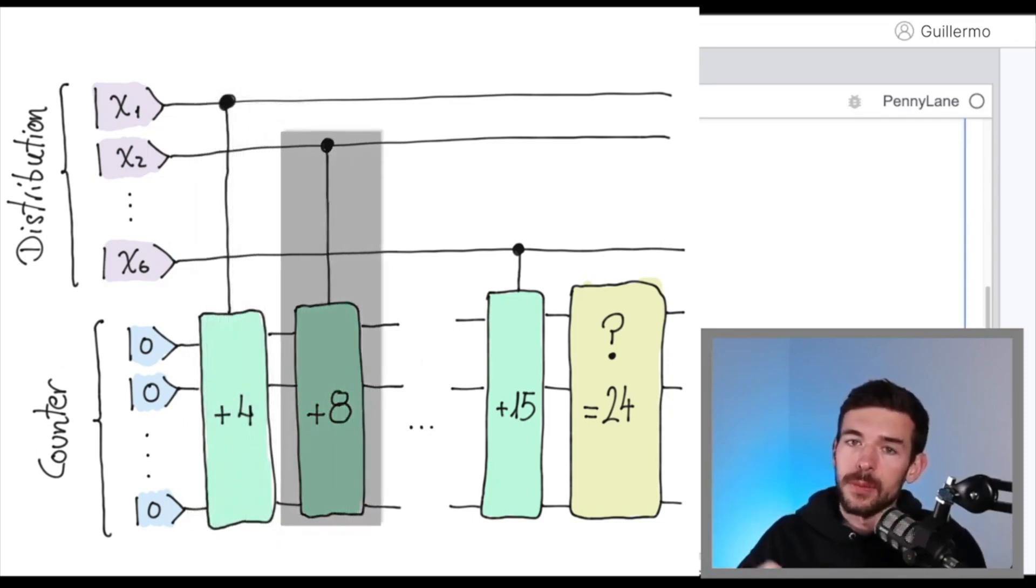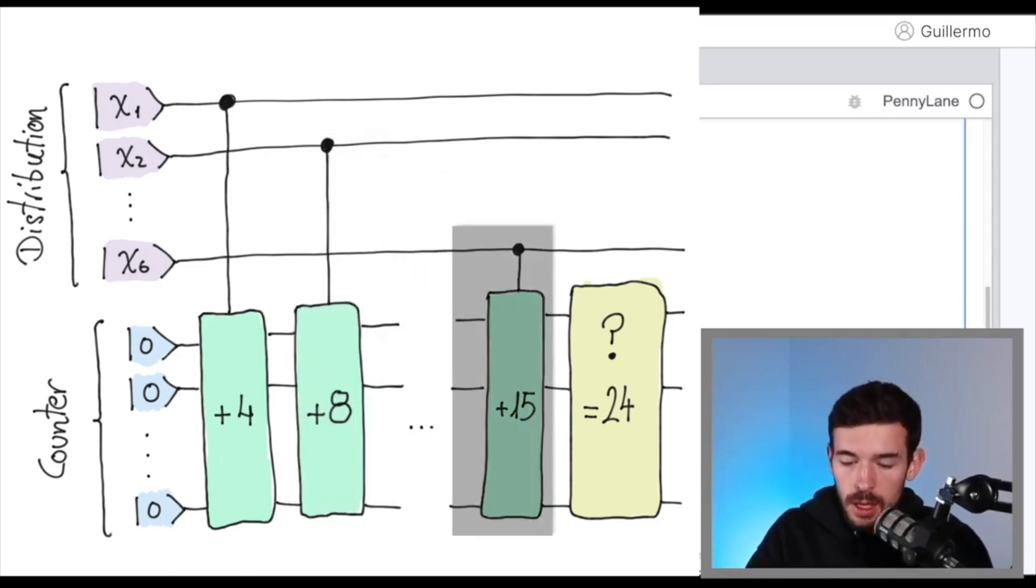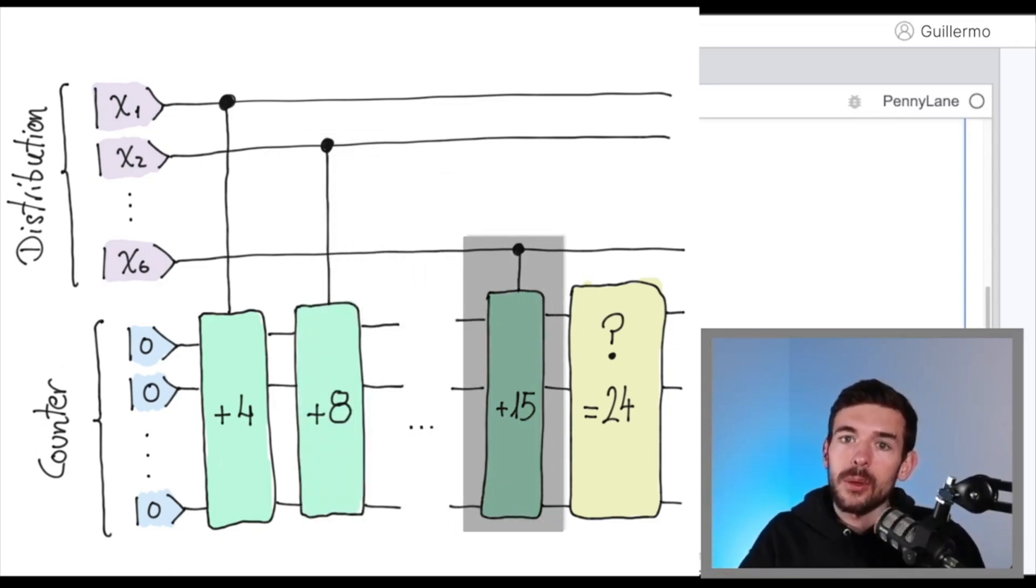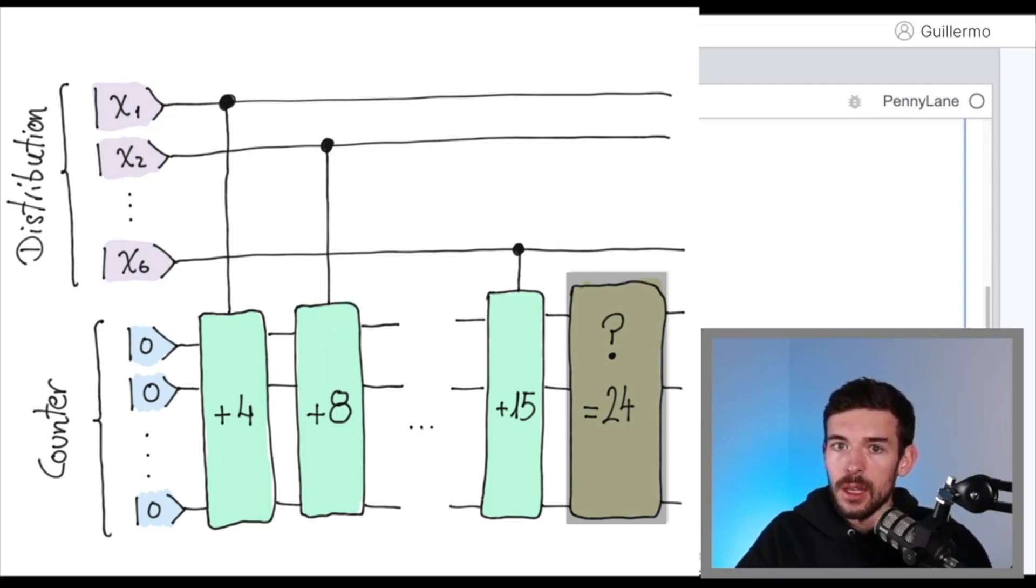And next, we have to do the same for x2. If the value in x2 is equal to 1, let's add 8 to our counter. So after that, if we do that with all the properties, in the final registers, we are going to have the amount of value that the second sibling has. So what we'll do is check if this is, in that case, 24, which means the amount of all the properties divided by 2. And if this is correct, we flip the element.